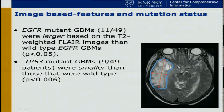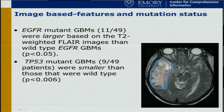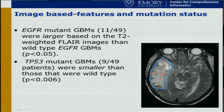We also looked at some of the mutation data. Of the 72 patients with markups, mutation status was available on 50 of them. We wanted to see if there were any imaging characteristics that defined patients likely to have EGFR mutations. EGFR patients had a larger area of tumor abnormality. Interestingly, TP53 mutants were actually smaller than the wild types. As a correlate, that means EGFR mutants were larger in general than the TP53 mutants.